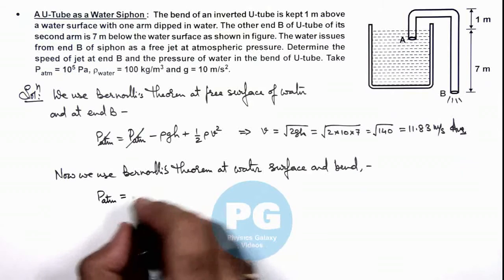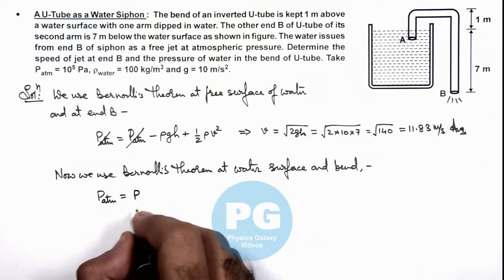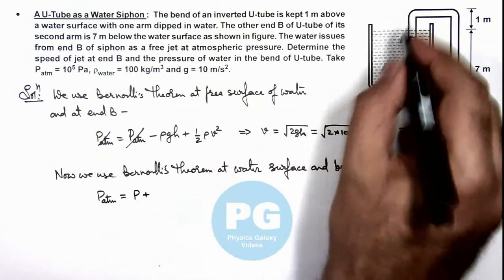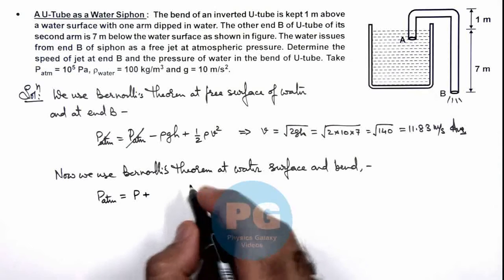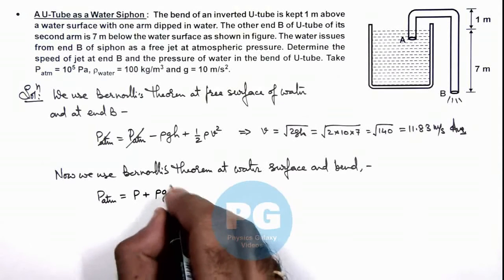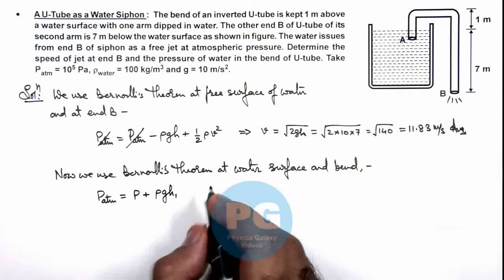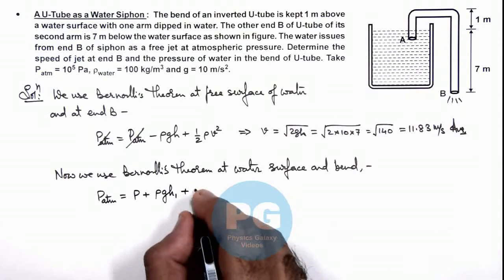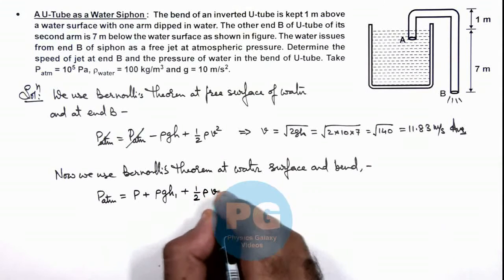So here pressure if we consider at P, plus here the gravitational potential energy is ρgh₁, and h₁ we consider as 1 meter, plus kinetic energy is half ρv².